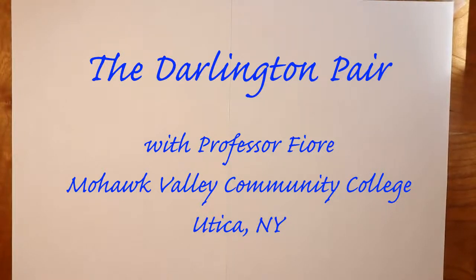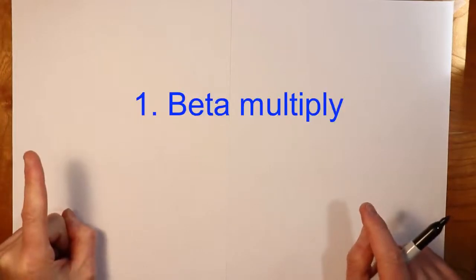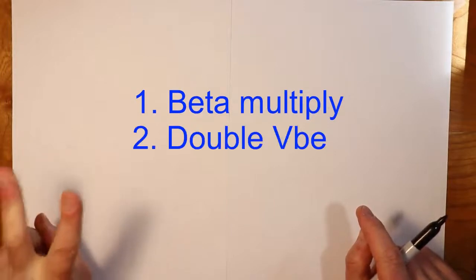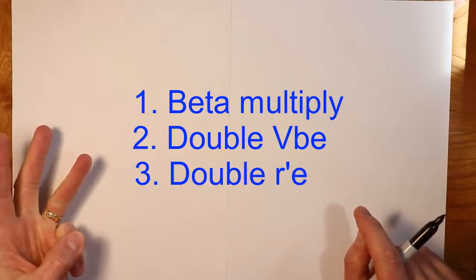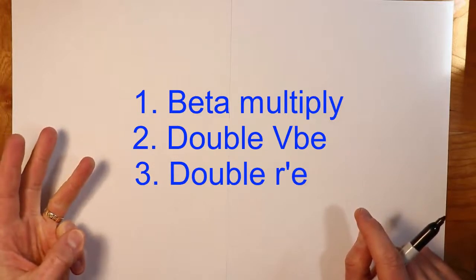Greetings! Today we're going to be looking at the Darlington pair. This is an interesting two-transistor configuration. It has a couple of salient characteristics. Number one is a vastly increased beta. Number two, a doubled VBE. And number three, the R'E will also be doubled.